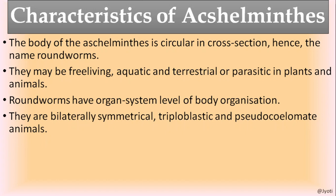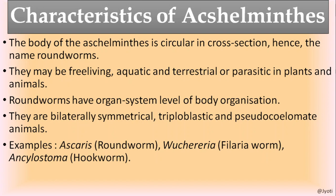Their body is bilaterally symmetrical and triploblastic. Most importantly, they are pseudocoelomate — the body cavity between ectoderm and endoderm is not lined by continuous mesoderm; instead, mesodermal pouches are present. This pseudocoelom is a very unique feature of this phylum. Common examples include Ascaris (roundworm), Wuchereria (filarial worm causing filariasis), and Ancylostoma (hookworm, which causes intestinal infection using its hook-like structures).